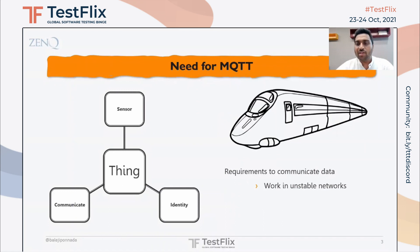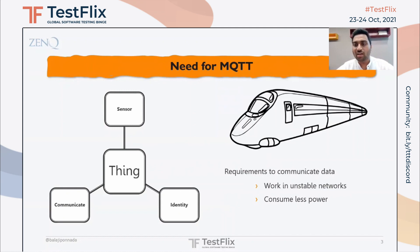The first requirement is that it should work in unstable networks, because the train travels from one distance to another and there is no guarantee of continuity in network. The second requirement is to consume less power — the thing may or may not have a continuous power source, so data transfer should happen with low power consumption. The third requirement is that the data transferred is lightweight — just binary data like geolocation, not pages of documents or images.